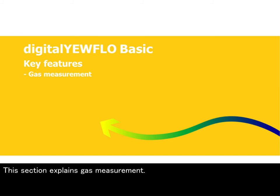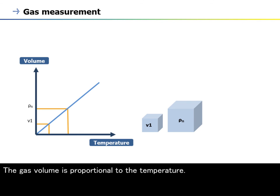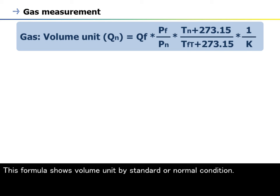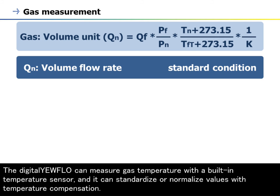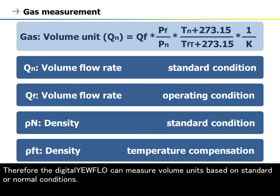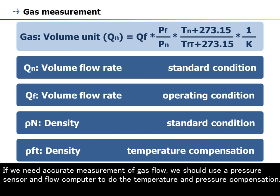This section explains gas measurement. This graph shows volume versus temperature in gas. The gas volume is proportional to the temperature. If we need units of volume at a standard or normal condition from operating condition, we should standardize or normalize it through temperature compensation. This formula shows the volume unit by standard or normal condition. The Digital EarFlow can measure gas temperature with a built-in temperature sensor, and it can standardize or normalize values with temperature compensation. Therefore, the Digital EarFlow can measure volume units based on standard or normal conditions. In this case, the Digital EarFlow uses fixed pressure values for the calculation. If we need accurate measurement of gas flow, we should use a pressure sensor and flow computer to do the temperature and pressure compensation.